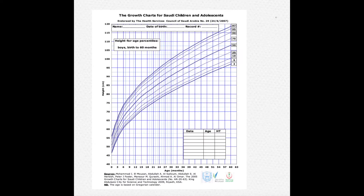So if you have a one-year-old child with a height of 70 centimeters, how are you going to display it on the chart? His age is one year, so at month 12 on the x-axis, you go up until you meet 70 on the y-axis, and you draw an X or a dot. That's the first thing you do.